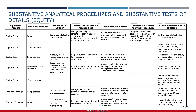Auditors evaluate the adequacy of the disclosure of stockholders' equity in the financial statements, ensuring compliance with accounting standards and verifying that presentation and disclosure are transparent and in accordance with applicable accounting standards. They also confirm that the terms and conditions of different classes of stock are appropriately disclosed, including dividend preferences and voting rights, ensuring stakeholders have sufficient information to understand the nature of stockholders' equity. Procedures related to dividends include verifying the accuracy of dividend calculations by recalculating expected dividends based on the terms of the stock agreements, confirming that dividend recognition aligns with those terms, and ensuring that any dividend payments made during the period are accurately recorded and disclosed.